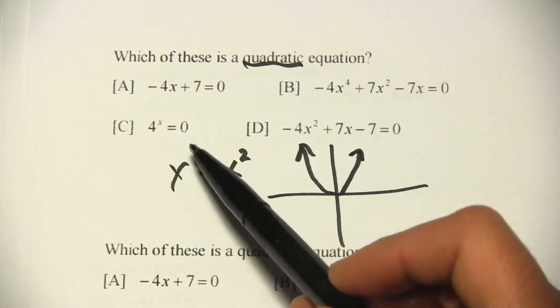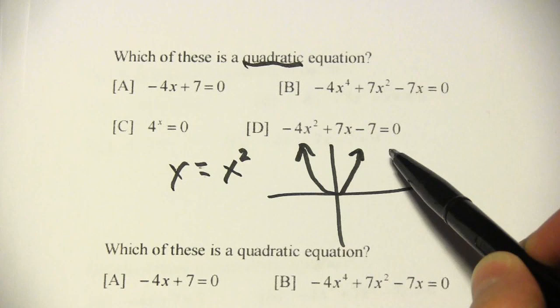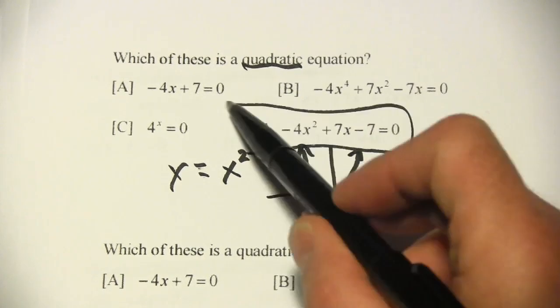4 to the x, that's an exponential equation, and here we have negative 4x squared plus 7x minus 7. That's our quadratic.